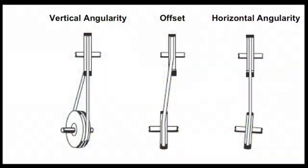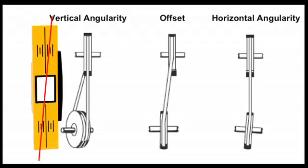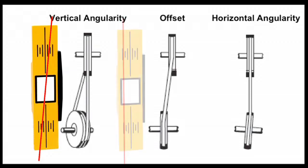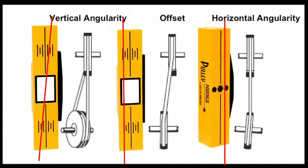There are three basic parameters that describe pulley misalignment: vertical angularity, horizontal angularity, and axial offset, which may occur in any combination. The position of the transmitted laser line on the reflector indicates vertical angularity and the offset. Horizontal angularity is indicated by the position of the reflected laser line onto the transmitter.